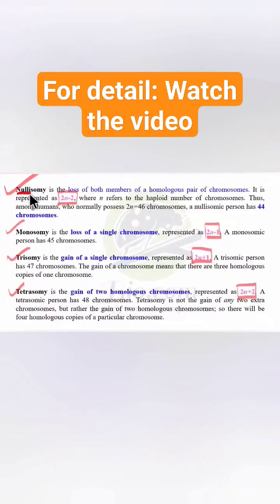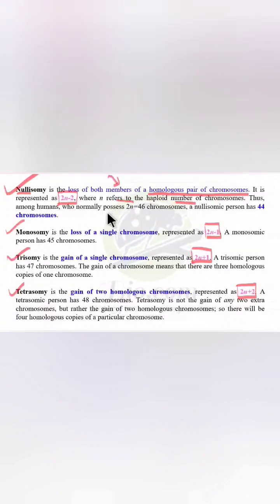Nullisomy: As the name represents, null means zero, so it is the loss of both members of a homologous pair of chromosomes. It is represented as 2n-2, where n refers to the haploid number of chromosomes. So 2×23-2 means...